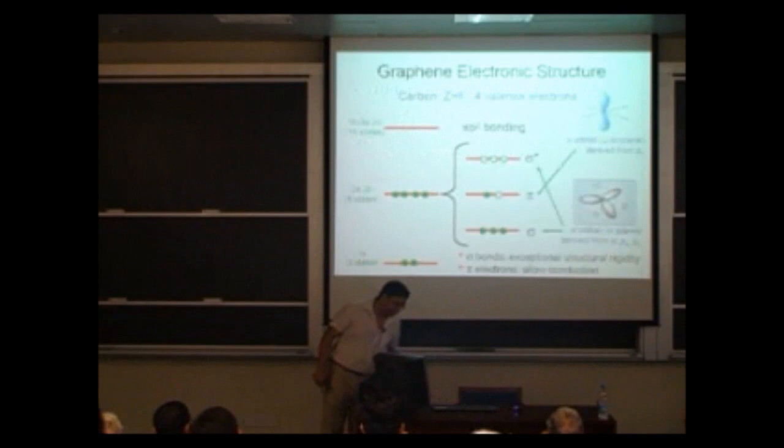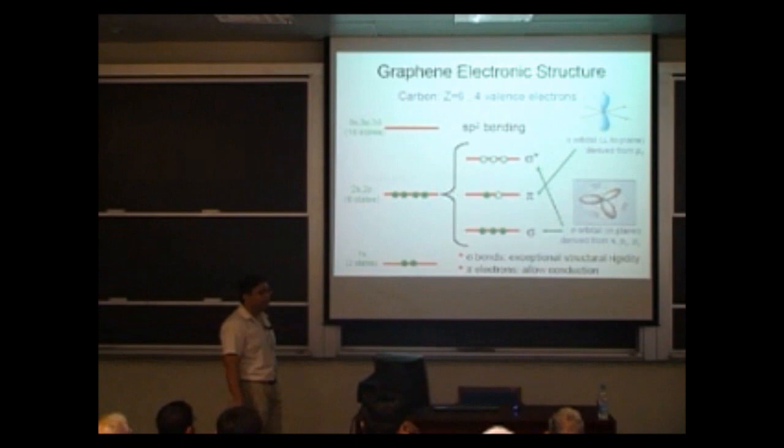A student asks: for epitaxial growth of graphene, which substrate is preferred? The speaker answers: silicon carbide.